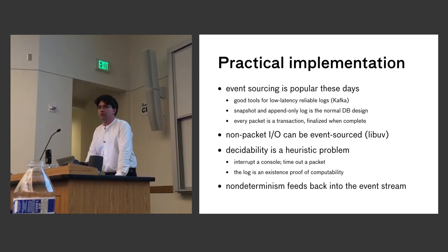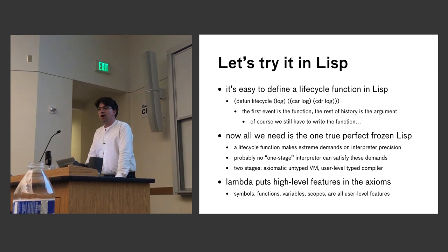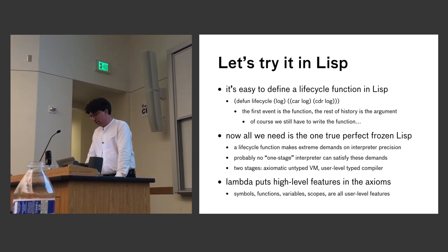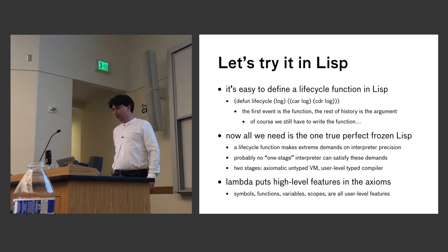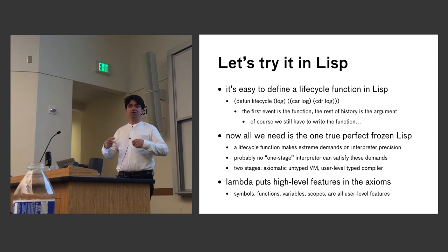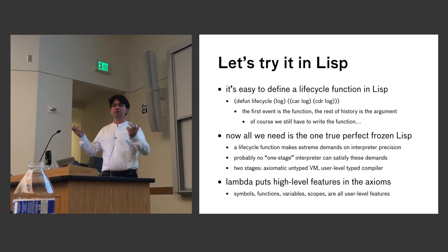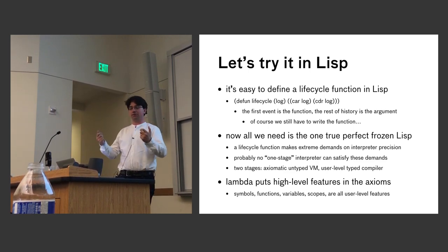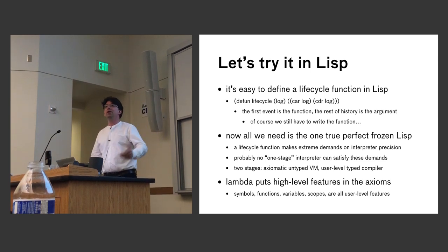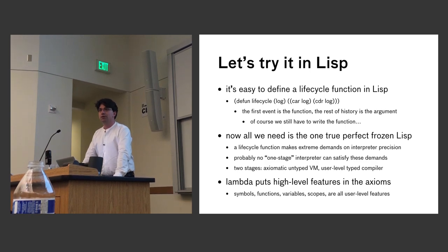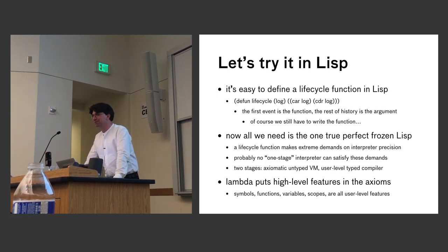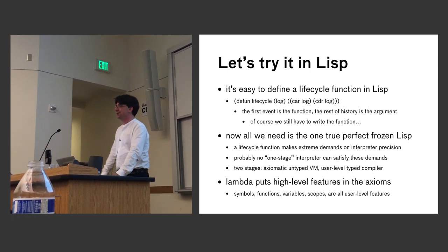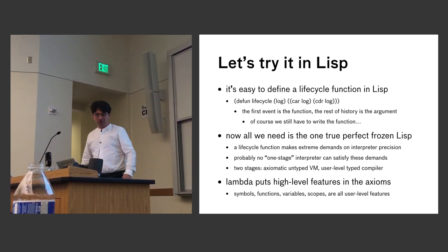There are probably Lisp fans in the audience — let's try doing this in Lisp. It's easy to define a lifecycle function in Lisp: the first event in the log is your operating system, and the rest is the events. Run the OS on the rest of the events. But then you need the one true Lisp. There have been many attempts to create the one true Lisp, and they haven't really worked out.